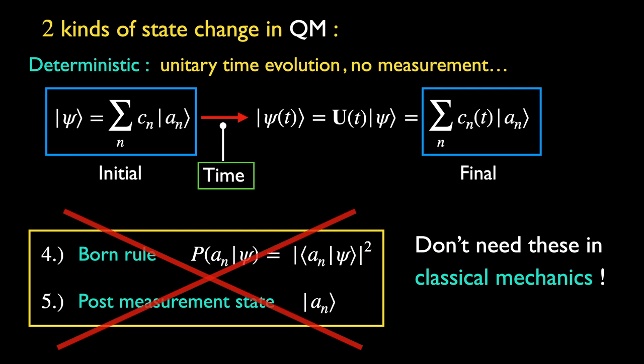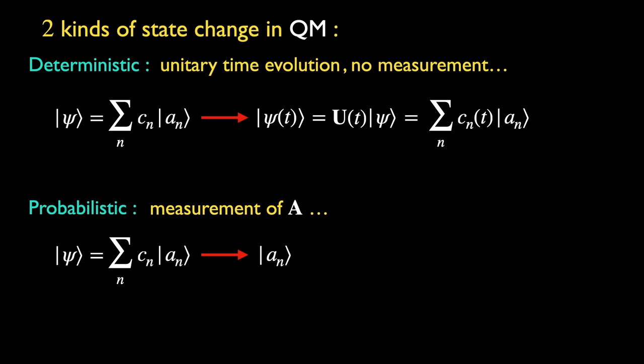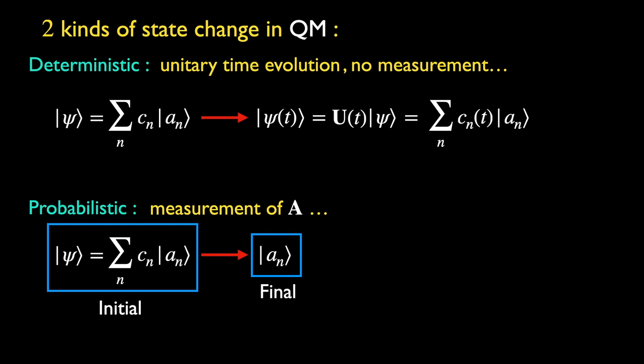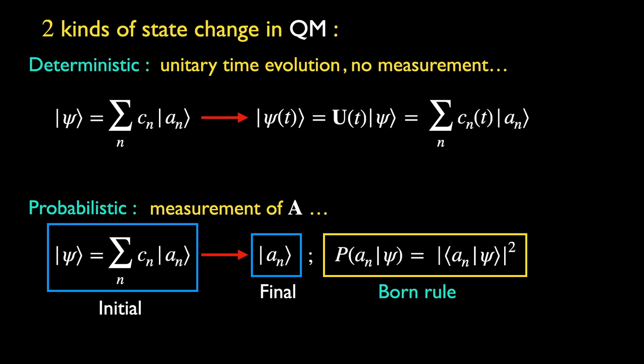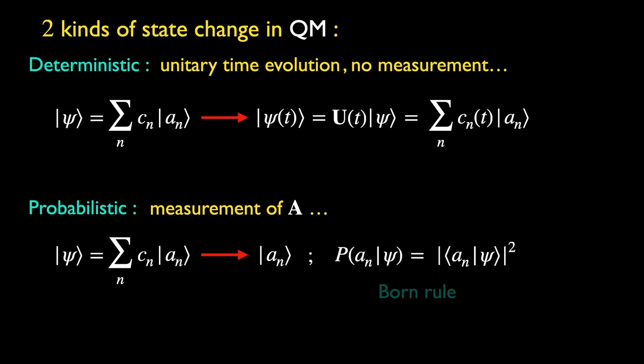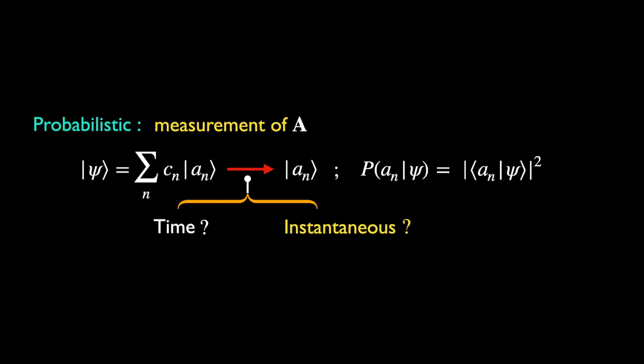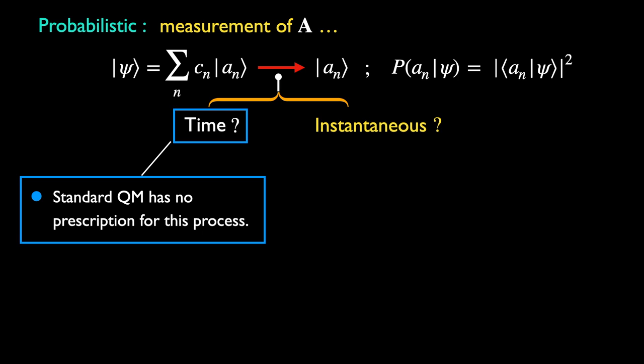However, for the measurement of all other observables for which psi-t is not the eigenstate, we encounter the second type of state change in quantum mechanics, where the change from the initial state to the final state due to the measurement of an observable A is probabilistic according to the Born rule. In sharp contrast to unitary evolution, quantum mechanics does not prescribe any time evolution rule for this process. This leads naturally to the question: does this change occur over a finite time, or is it instantaneous? Since quantum mechanics has no prescription for the time evolution of the measurement process, any suggestions would be an extension of the standard formalism. We are not prepared to do this here — it lies in the domain of current research.